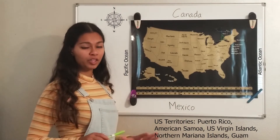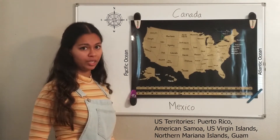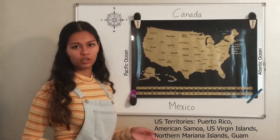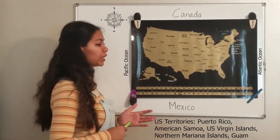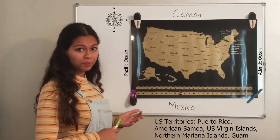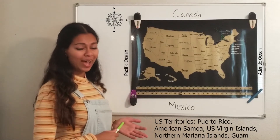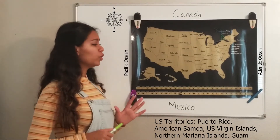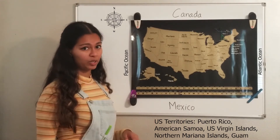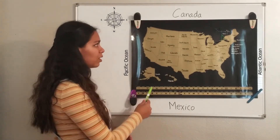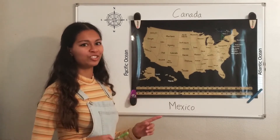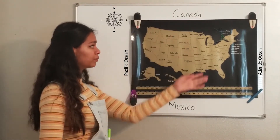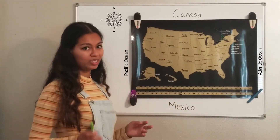The last part of U.S. geography covers the five U.S. territories — you only need to know one, but here are all five: Puerto Rico, Guam, American Samoa, the U.S. Virgin Islands, and the Northern Mariana Islands. Remember that Hawaii and Alaska are part of the U.S. as non-contiguous states — they are not territories, they are states.